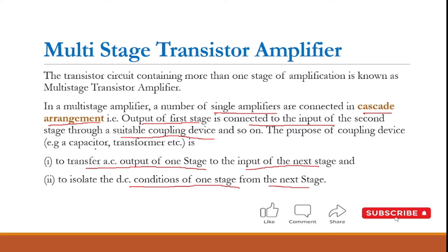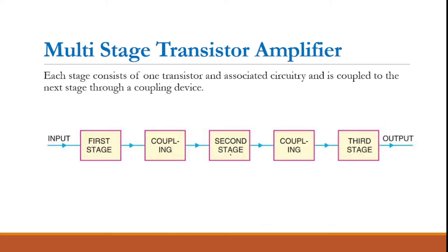The coupling devices we can use include a capacitor, a transformer, or in some cases no coupling device is needed — we can couple directly. So we can have a directly coupled, capacitor coupled, or transformer coupled transistor amplifier. The input is connected to the first stage, then through a coupling device to the second stage, and again through a coupling device to the third stage, giving us the final output.